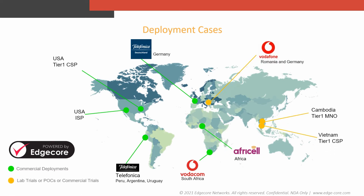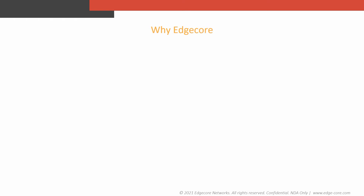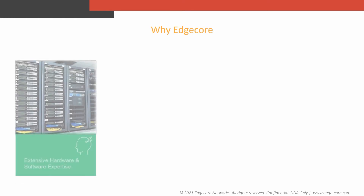EdgeCode is actively working with ecosystem partners in various regions to enable the deployment of DCSG. There will be more deployment cases as we see the industry is adapting open networking solutions. Why is EdgeCode Networks your partner in open networking?